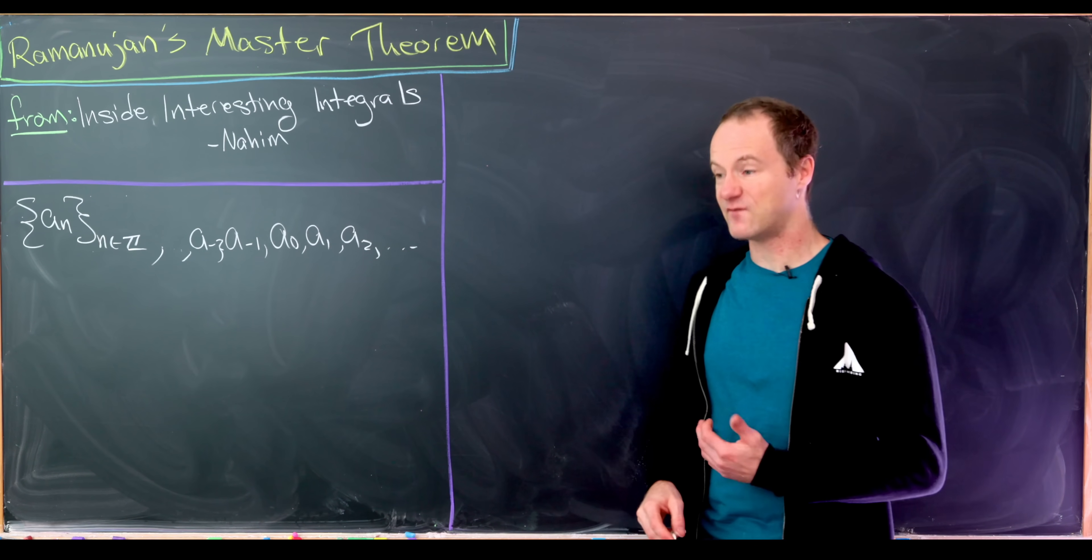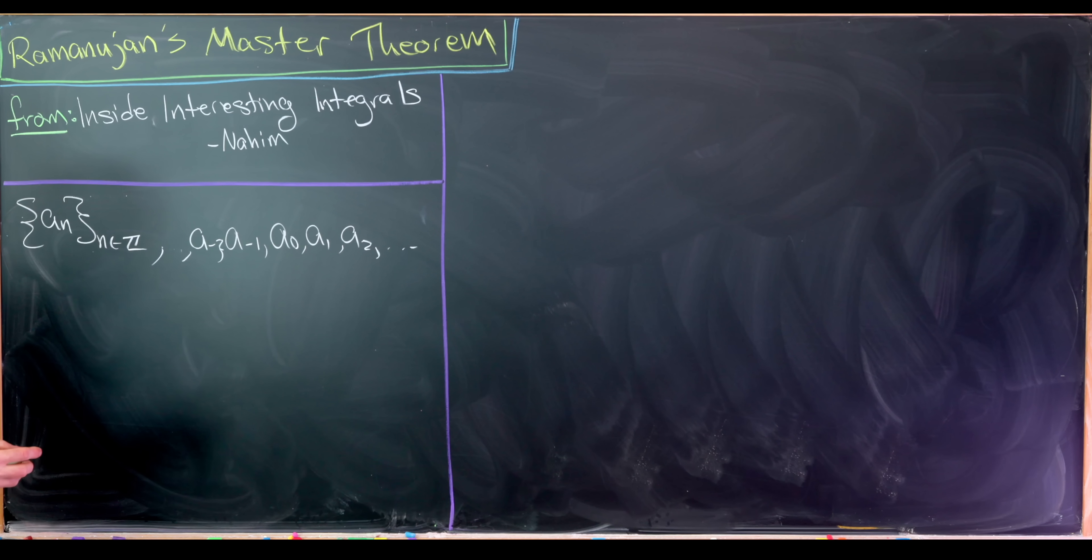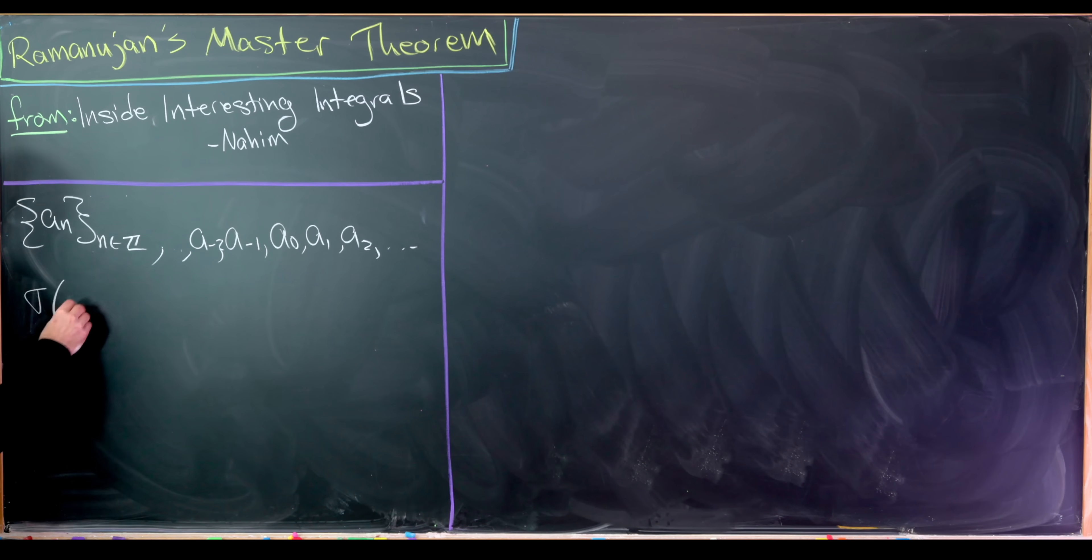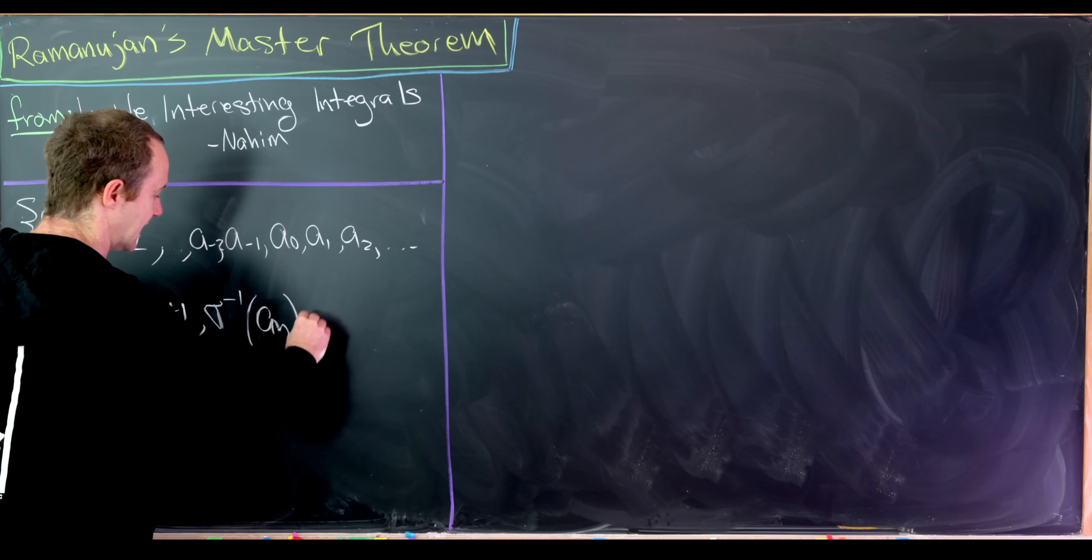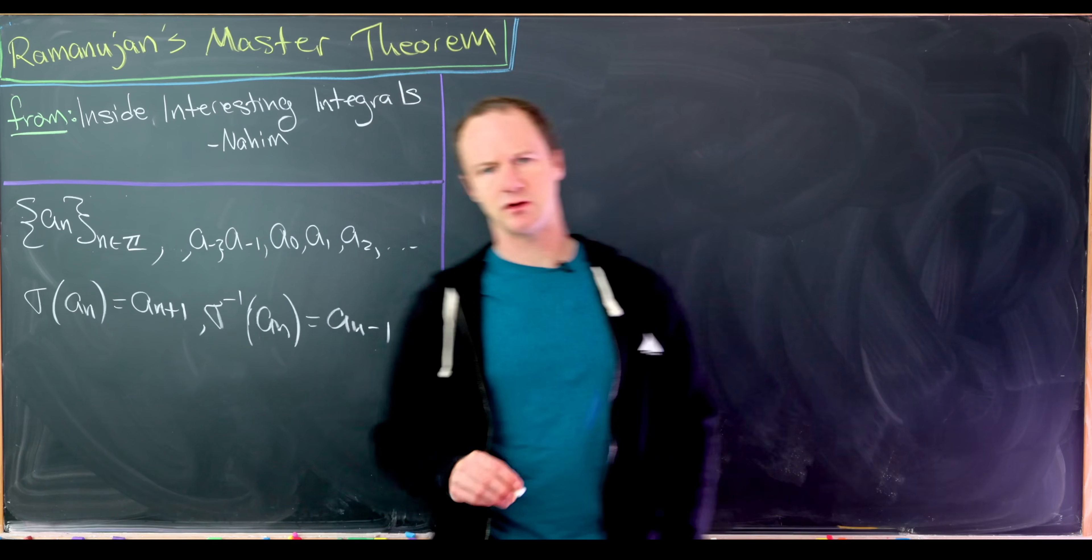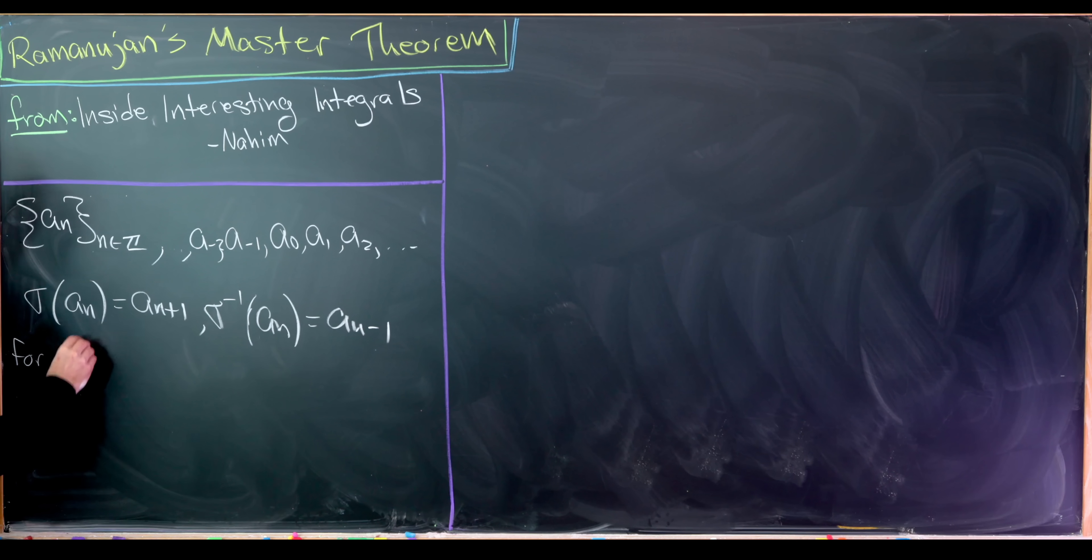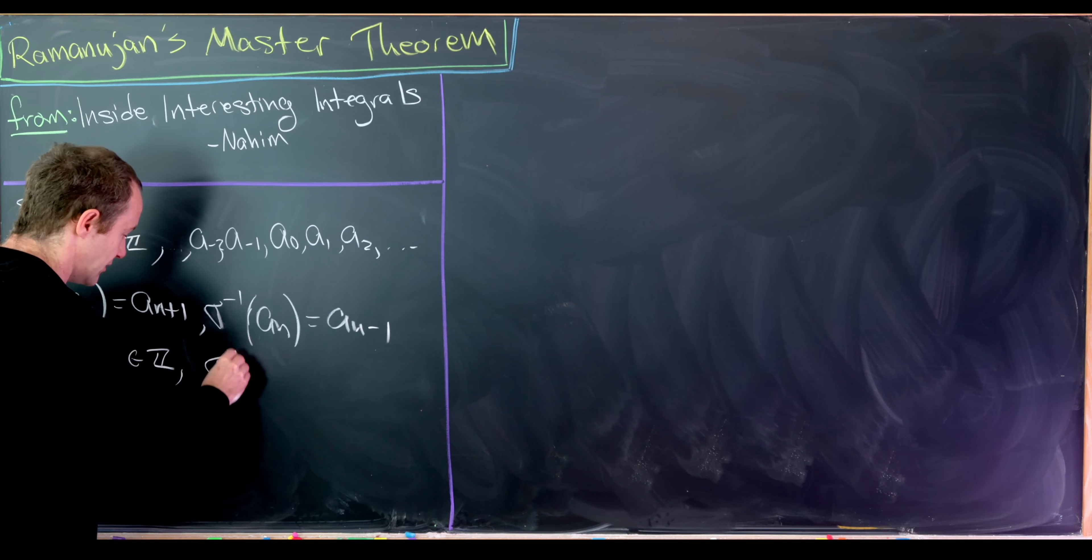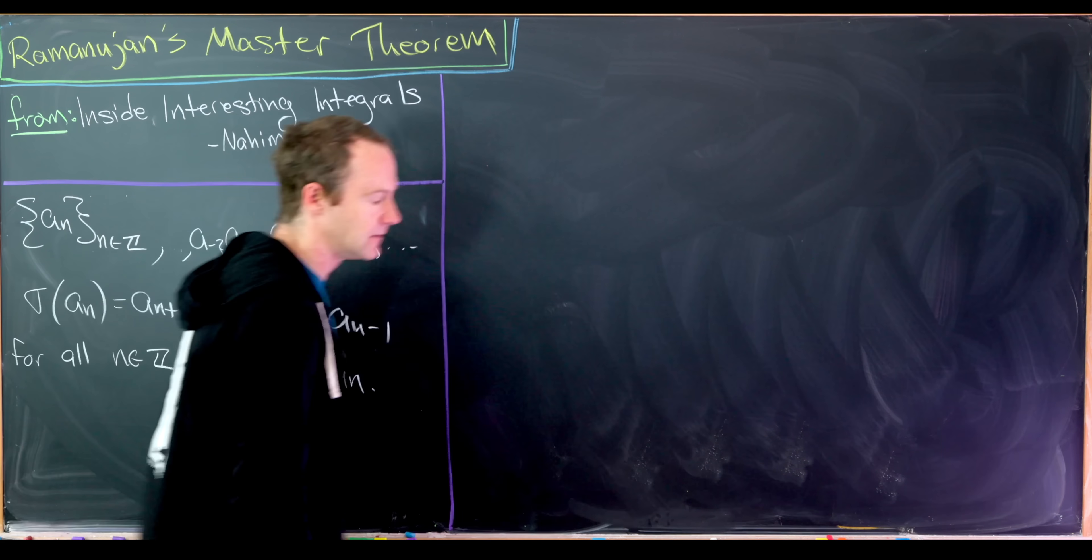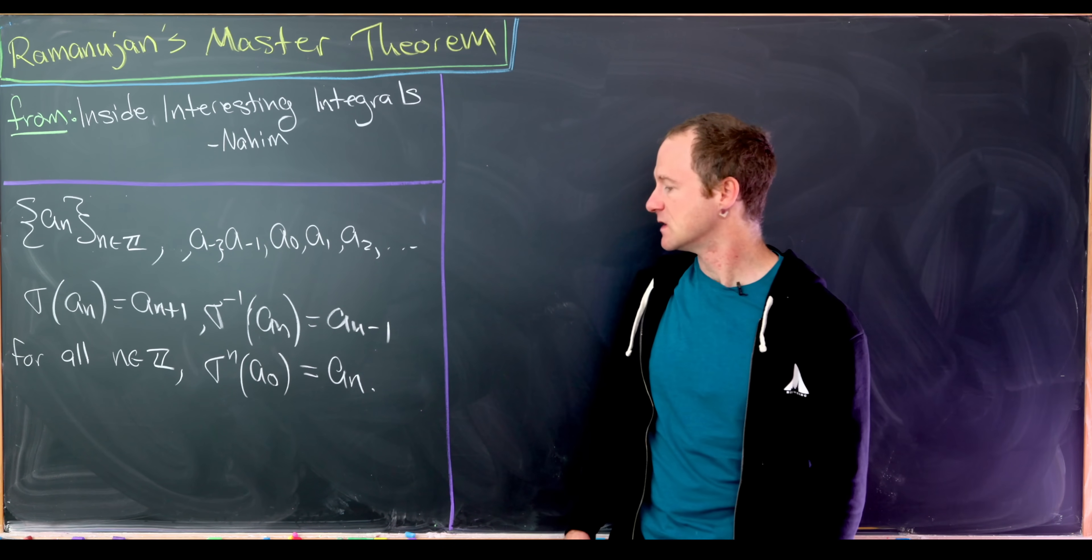Our next building block will be a function which pushes us through this sequence. We'll call that function sigma, lowercase sigma, but you could really call it anything you want. We'll have sigma which takes a_n and gives us a_{n+1}. Notice that means that sigma inverse will take a_n and give us a_{n-1}. So this is most definitely an invertible function just by its definition. Another thing that we might want to notice is that for all integers n, not just positive integers but also negative integers, we have sigma applied n times to a_0 is equal to a_n. Whereby sigma to the negative 5, for instance, we really mean sigma inverse applied 5 times.